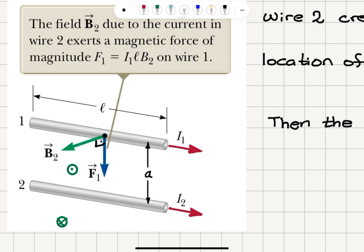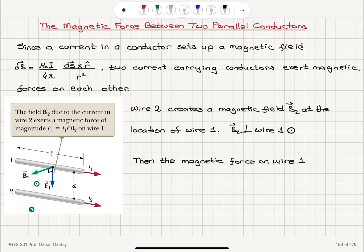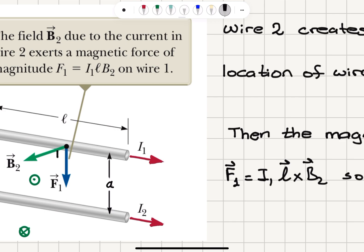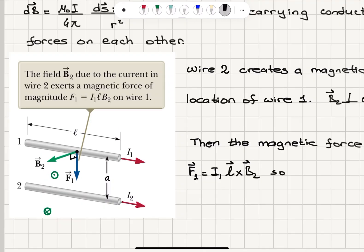The force acting on this wire will be determined by the Lorentz force. The force on wire 1 is due to the moving charges inside the wire. It's the current I1, L cross the magnetic field due to wire 2. Since the L vector is in the direction of the current and the B vector are perpendicular to each other, as we have seen.